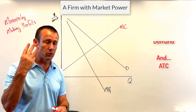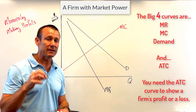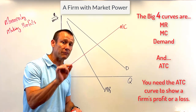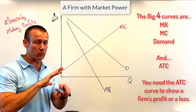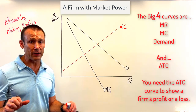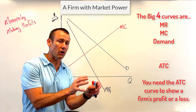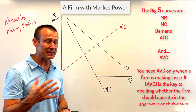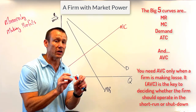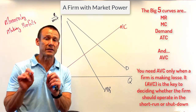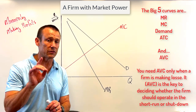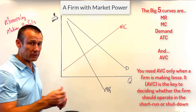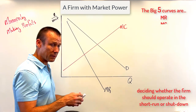The fourth curve is ATC — you need ATC to show profit or loss. The fifth curve, which won't come into play here, is the AVC curve, used to decide whether you're going to shut down or continue to operate in the short run. With that said, the big three give me my price and quantity, so let's go ahead and locate them on the graph.